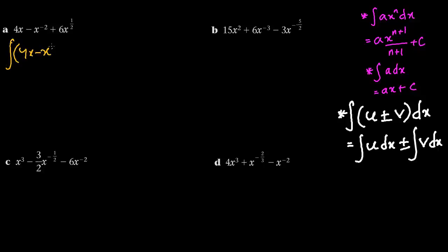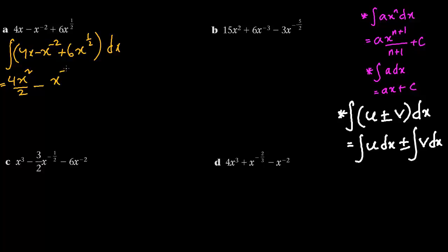Integration of 4x minus x to the power minus 2 plus 6x to the power half, dx. It is very important that you include the bracket, otherwise the integration applies only to the first term. So 4 is the constant, we write x squared by 2. There is a minus, we write minus; x to the power minus 2 increases by 1 to give minus 1, divided by minus 1.